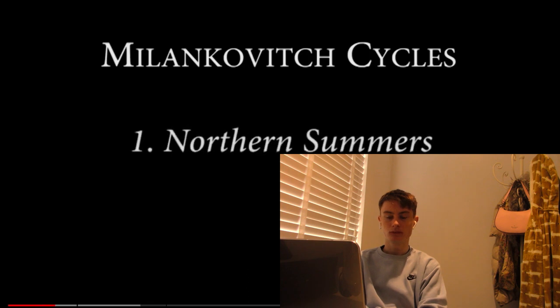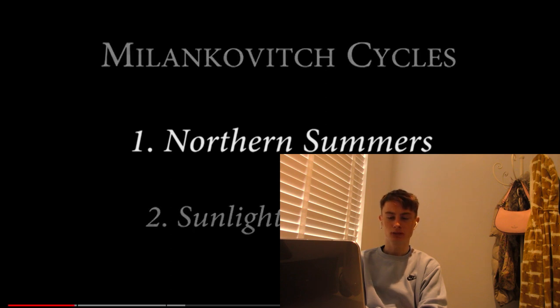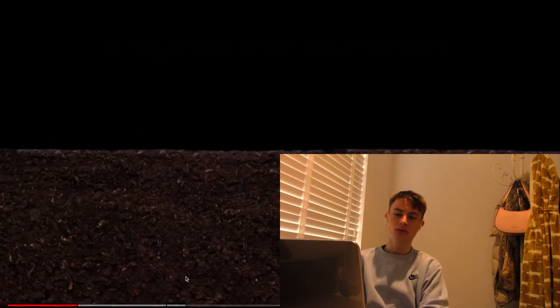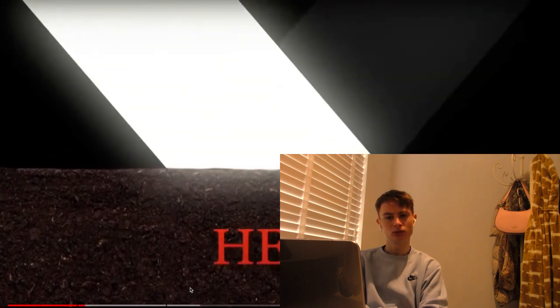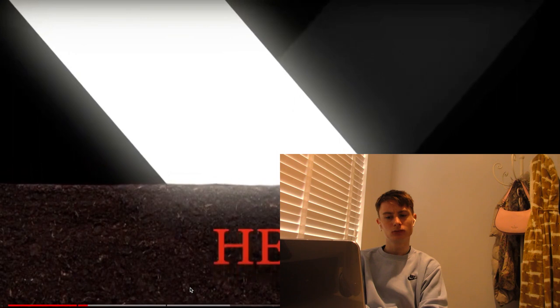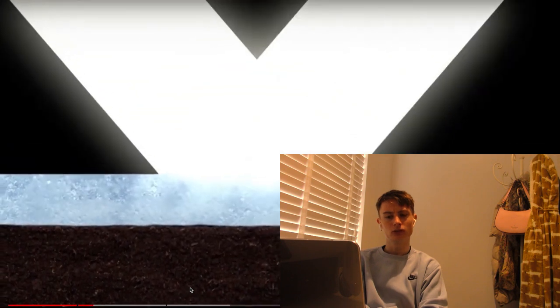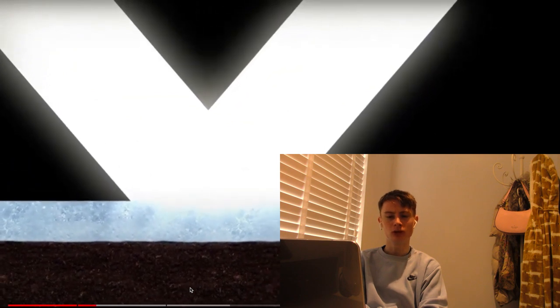First, the Earth's climate is strongly affected by how much sunlight the northern latitudes receive during the summer. Second, this amount of sunlight varies based on changes in the Earth's orbit and rotation. Why are the northern latitudes so important? It's because of ice. When sunlight hits the ground, most of the energy is absorbed as heat. But if the ground is covered in ice, most of the light reflects away because ice is white.